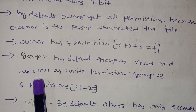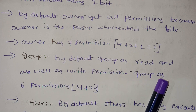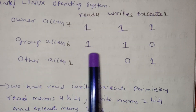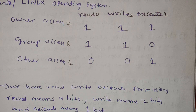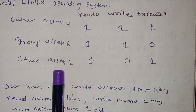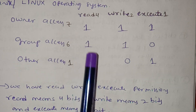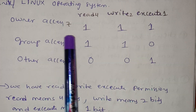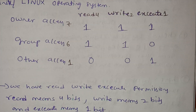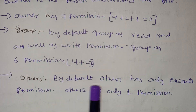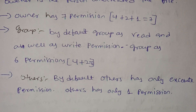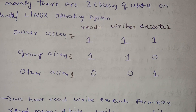Next, the group — by default, the group has read and write permissions, so group has 6 permissions. 4 plus 2 equals 6. Others by default have only execute permission, meaning others have only one permission — execute, which is 1 bit.